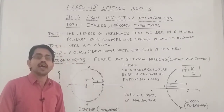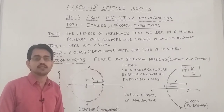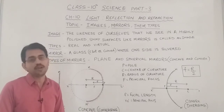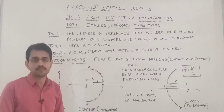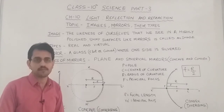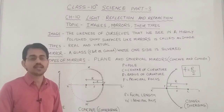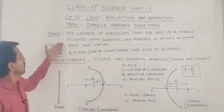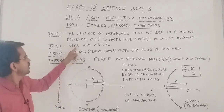First of all, let's talk about what is an image. The likeness of ourselves that we see in highly polished, shiny surfaces like mirrors or any metallic object is called an image. You must have seen your image in the dressing table mirror used for personal grooming. In terms of physics, image means the optical appearance of an object.